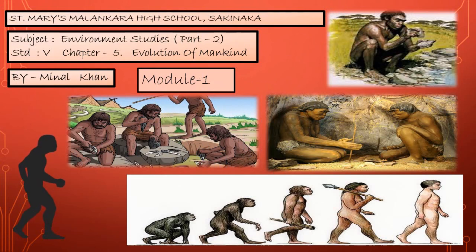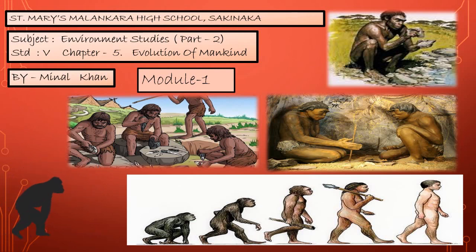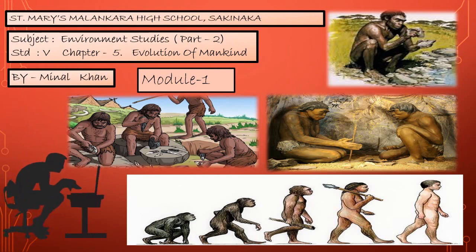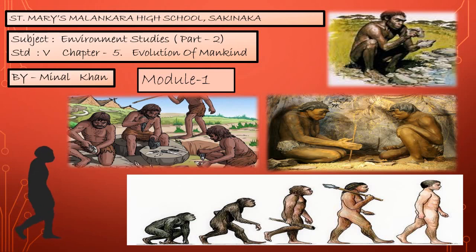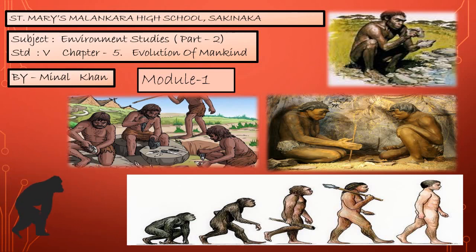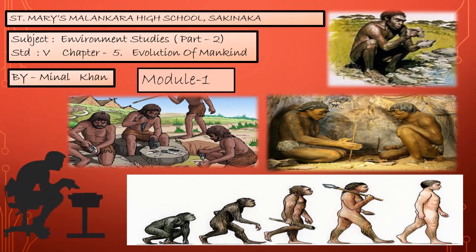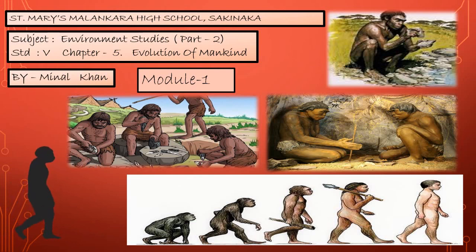Welcome student. Today we will be learning a new chapter from 'How We Came to Be' - Environmental Studies Part 2, Standard 5, Lesson No. 5: Evolution of Mankind, Module 1. In this module we will learn about how the apes evolved into a primitive man.